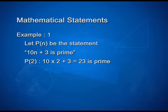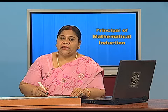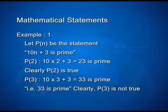What is P(2)? Obviously, 10×2 + 3 = 23, which is prime. That is, P(2) is true. What about P(3)? It becomes 10×3 + 3 = 33. Is 33 prime? Clearly, P(3) is not true.